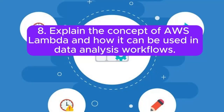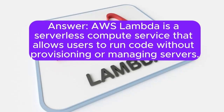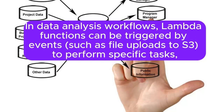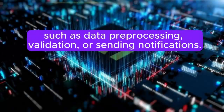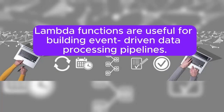8. Explain the concept of AWS Lambda and how it can be used in data analysis workflows. Answer: AWS Lambda is a serverless compute service that allows users to run code without provisioning or managing servers. In data analysis workflows, Lambda functions can be triggered by events such as file uploads to S3 to perform specific tasks such as data pre-processing, validation, or sending notifications. Lambda functions are useful for building event-driven data processing pipelines.